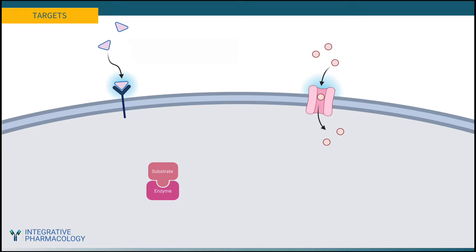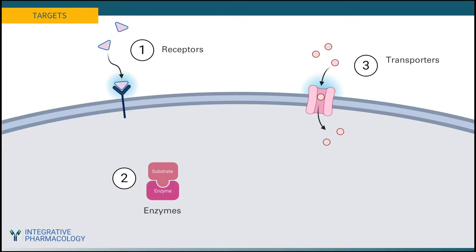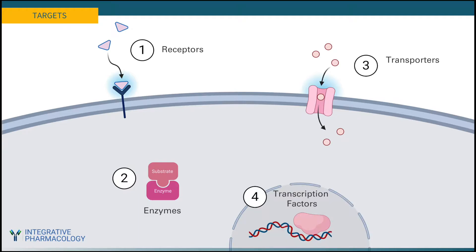Most therapeutic agents work by binding to proteins that regulate a specific biological process — in pharmacology we call them targets. There are four main types: receptors, enzymes, transporters and channels, and transcription factors. These are all proteins encoded by genes, which is yet another reason to learn pharmacology — to be able to translate genetics in clinical practice, understanding what these targets are and what genes affect them.